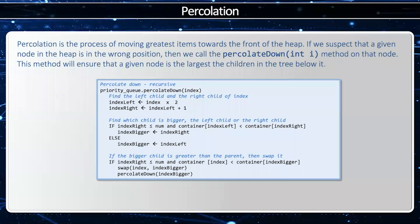The percolation process is the process of moving the greatest item towards the front or the top of the heap. Now, how does this function work? We're going to start by taking the heap index and we're going to find the left child and the right child by multiplying the index by two and then by two plus one.